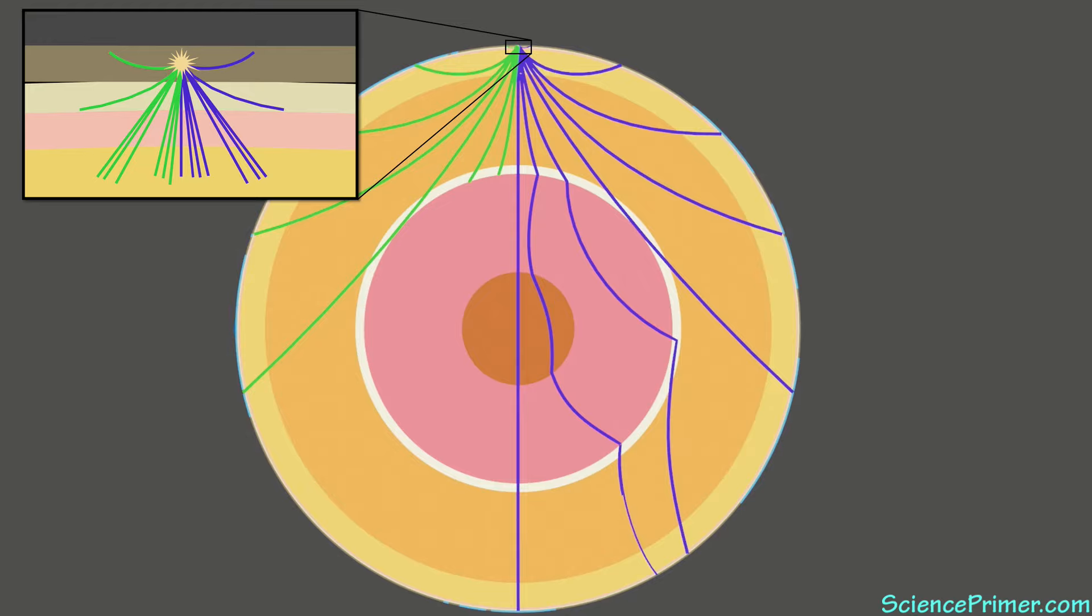The disappearance of the S waves and the refraction of the P waves create shadow zones where no waves are detected. Consistent with the liquid outer core preventing the propagation of shear waves, no S waves are detected past 103 degrees from the origin of the waves. The refraction patterns of the P wave creates a gap in P wave detection between 103 and 143 degrees.